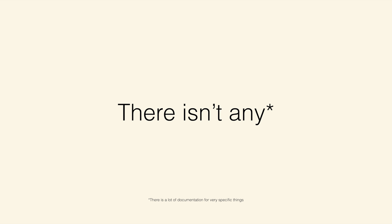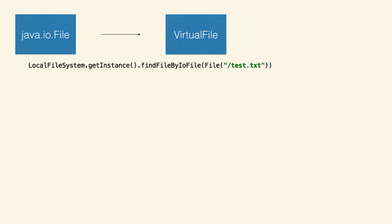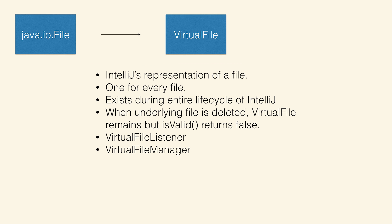What I'm going to be going over is the underlying architecture for IntelliJ. Where that really starts is with a Java file, like an IO file. The first thing IntelliJ is going to do is get one of these files and convert it to its own type called a virtual file. All IntelliJ is really doing, for the most part, is acting like a really complicated file browser, and the files it deals with are these virtual files. If you wanted to get a virtual file from an IO file manually, you can use local file system, get instance, find file by IO file. You're really not going to have to do this very often — usually you'll get a virtual file passed to you.